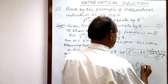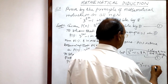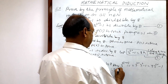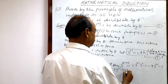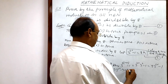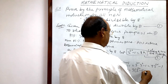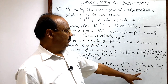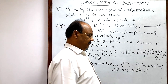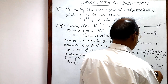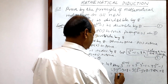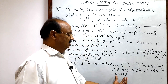So 3 to the power 2r plus 1 minus 1 can be written as 3 to the power 2r into 3 squared minus 1, which is 9 into 3 to the power 2r minus 1. And this is 9 into 3 to the power 2r minus 9 plus 8. Since minus 1 can be written as minus 9 plus 8, the first two terms give us 9 into (3 to the power 2r minus 1) plus 8. By relation number 2, 3 to the power 2r minus 1 is 8k, so this equals 9 into 8k plus 8, which equals 8 times (9k plus 1). This is divisible by 8.